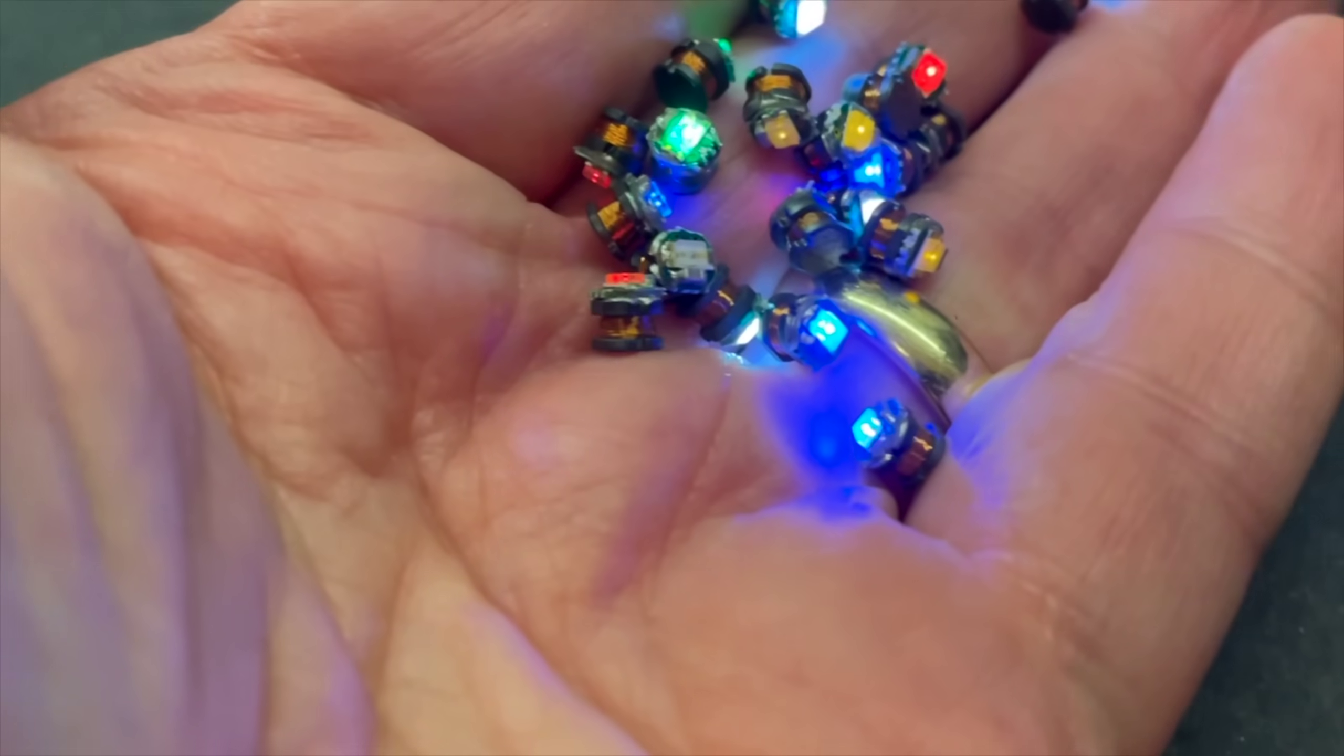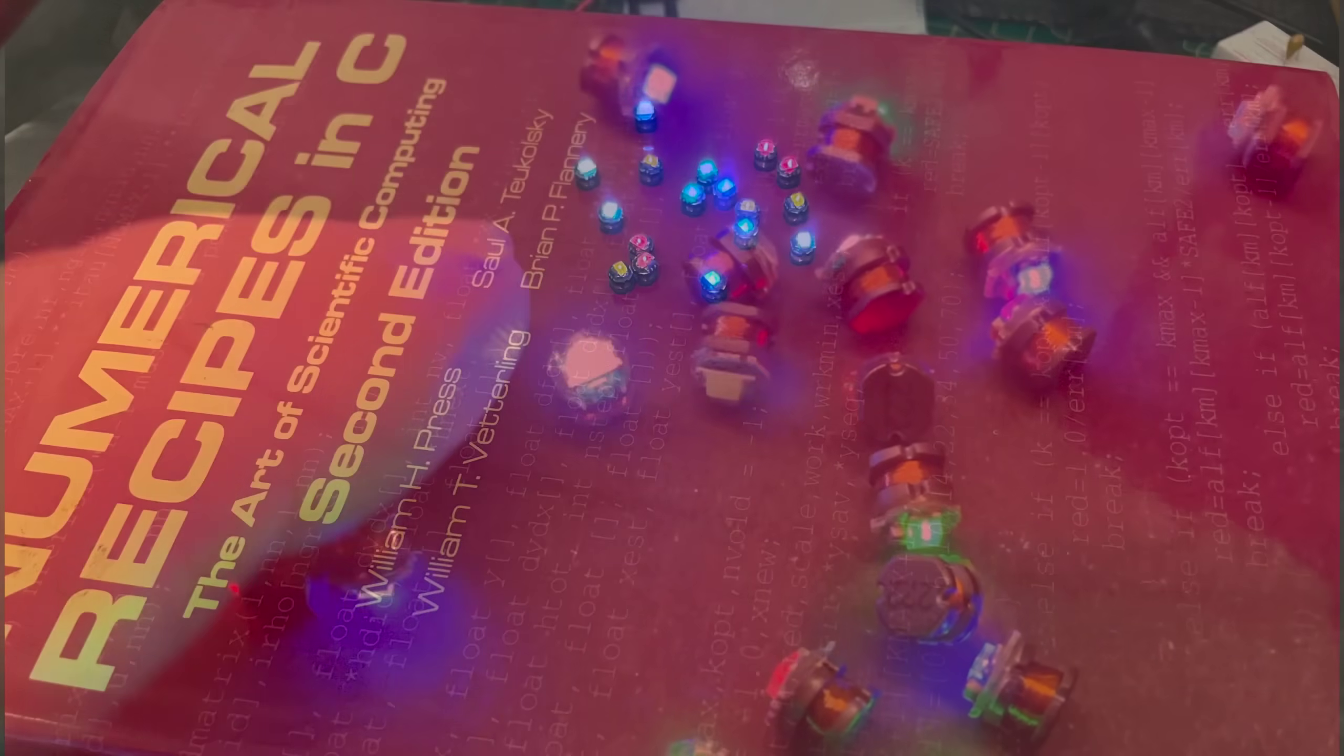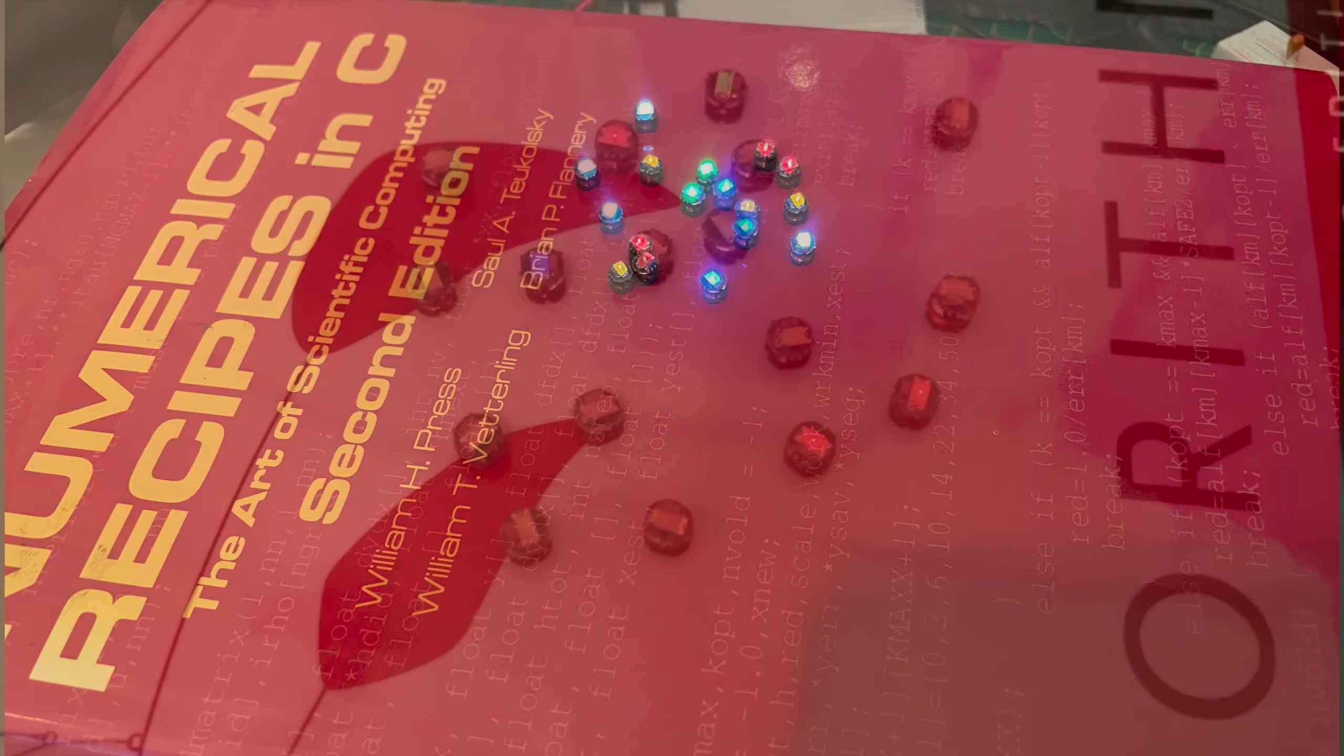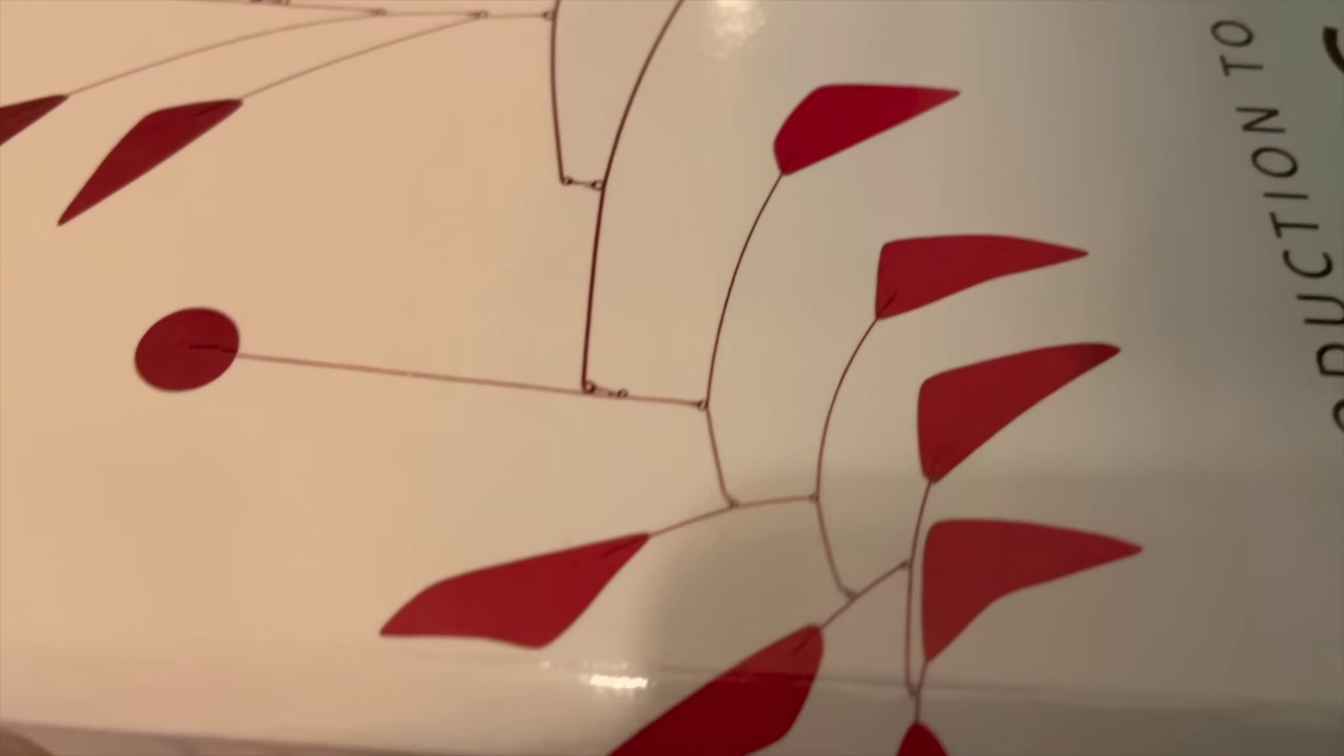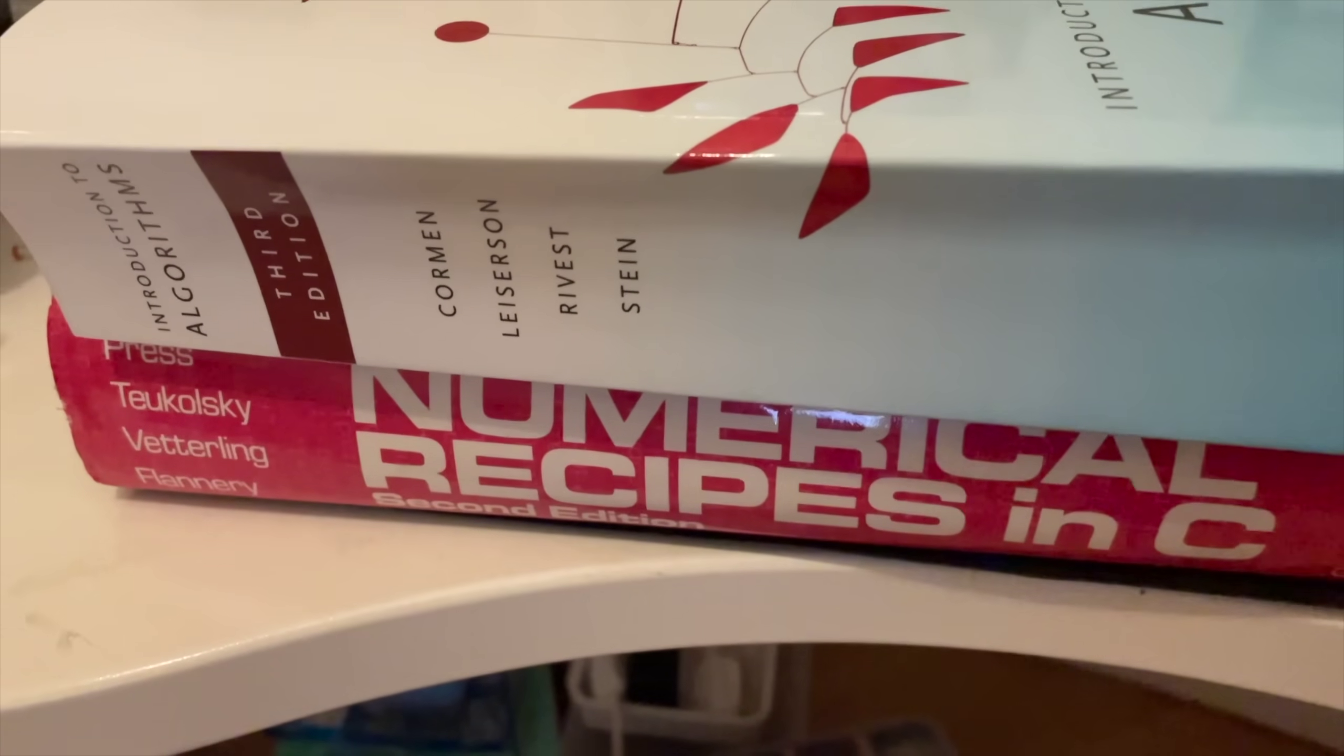As you saw earlier, the power can penetrate flesh and paper very easily. And they can actually get through pretty thick obstructions. Here we see them working through a copy of Numerical Recipes in C. And here I've stacked the Algorithms book on top of this. That's three and a half inches of dense material and it still kind of works.